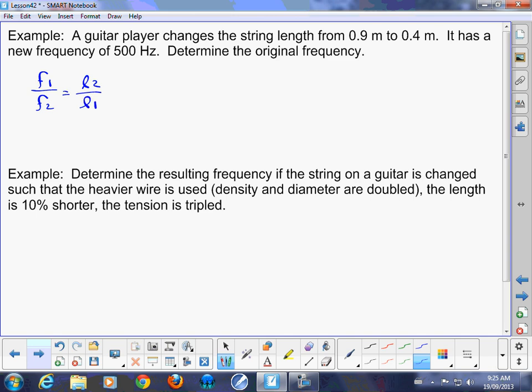Substitute in what you know. So we know the string length, it was 0.9, so the old length is 0.9. The new length is 0.4. In terms of frequency, we know that the new frequency, which would be our f2, is going to be 500. So what was the original frequency if you hadn't plucked it?